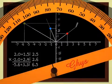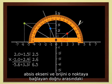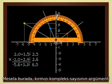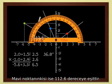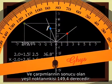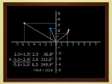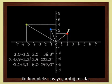The argument of a complex number is measured by the angle between the abscissa axis and the straight line joining the origin to the point. Here, for instance, the argument of the red complex number is 36.8 degrees. The argument of the blue point is 112.6 degrees. And for the product, the green point, we get 149.4 degrees. That is, the sum of the arguments of the two numbers. When we multiply two complex numbers, moduli are multiplied and arguments are added.